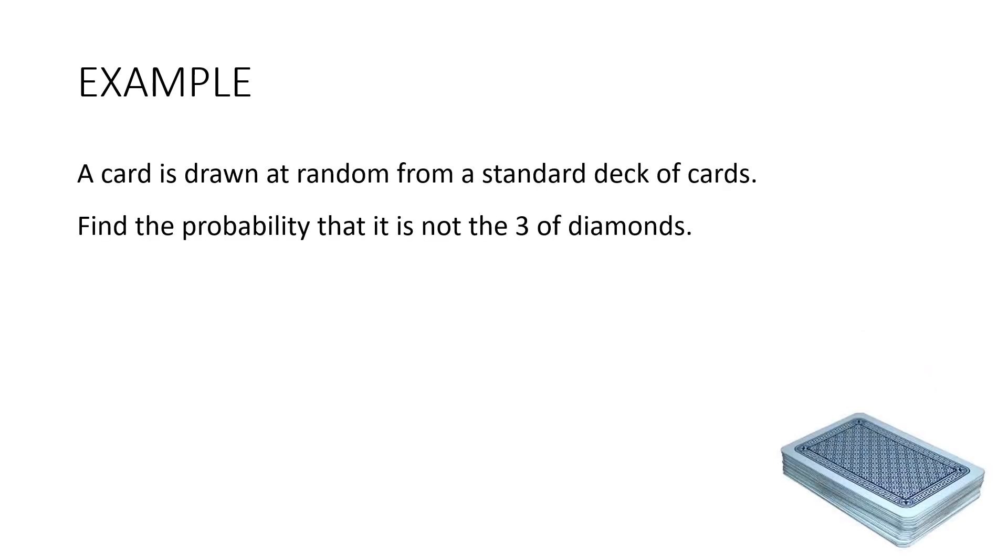Here's one more example. A card is drawn at random from a standard deck of cards. Find the probability that it is not the 3 of diamonds. So here's what we write. The probability that it's not the 3 of diamonds is equal to 1 take away the probability that it is the 3 of diamonds which is 1 take away. It's only 1 three of diamonds in the pack so that's 1 on 52 and that gives us 51 on 52.